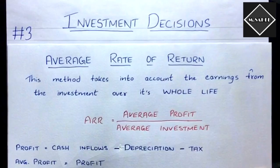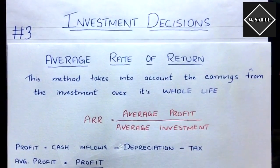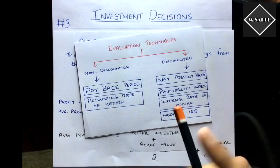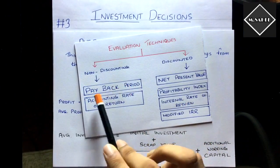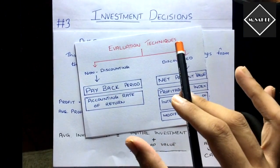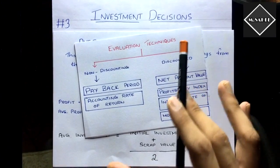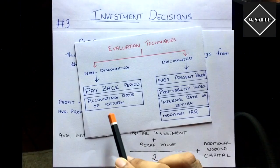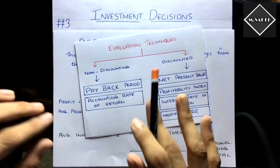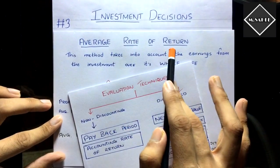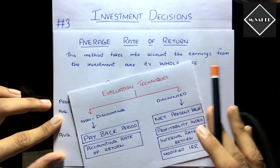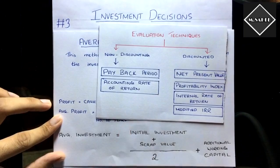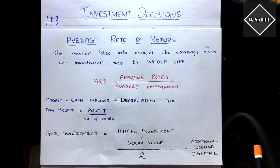Hi everyone, this is the third video of the Investment Decision chapter. In the previous video we saw the payback period technique of capital budgeting. In this video we are going to see another technique of capital budgeting — that is Accounting Rate of Return, or you can also call it Average Rate of Return. It has two names: Average Rate of Return or Accounting Rate of Return.